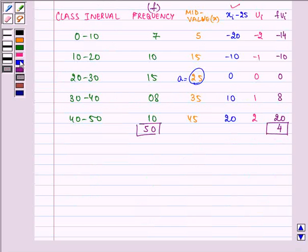Now, the formula for mean is a, that is assumed mean, plus h into 1 upon n summation where i starts from 1 till 5, fi ui.